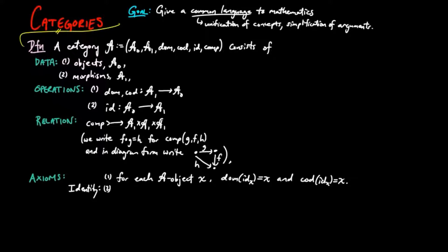The second states that for each amorphism F, the composition of the identity of the codomain of F precomposed by F is equal to F, and F precomposed by the identity of the domain of F is equal to F.